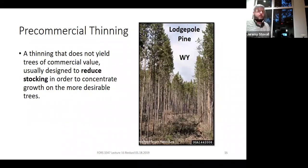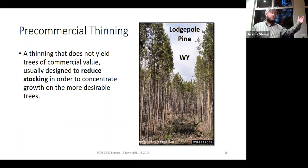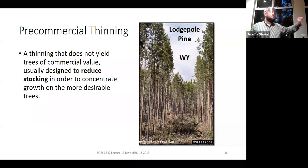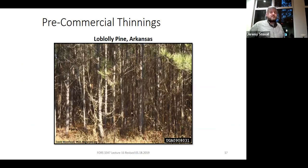With pre-commercial thinning, all thinnings reduce stocking and don't yield any trees of commercial value, so you usually cut the trees down and leave them—or push them over with a bulldozer, have a hand crew with machetes, or accomplish it with herbicide through hack-and-squirt. The specific tool you use isn't specified; what's specified is what size trees you're cutting and what size trees you're freeing up to grow. Here's an example of a loblolly pine plantation in Arkansas in desperate need of a pre-commercial thin.